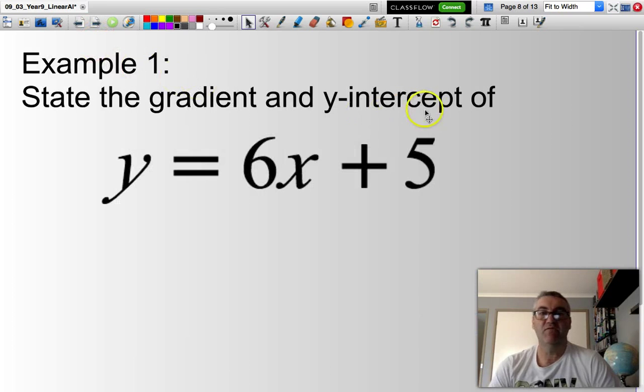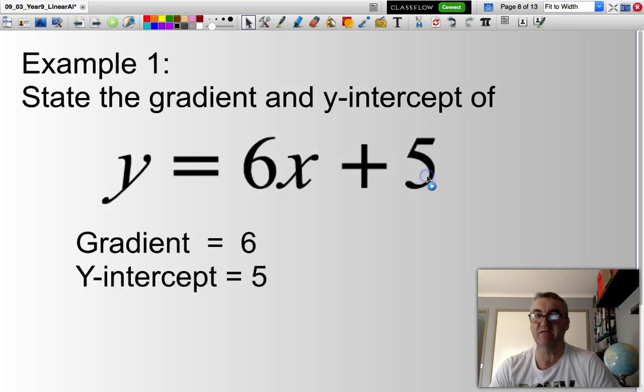Now, if I was looking at this equation here, y equals 6x plus 5, what is the gradient and what is the y-intercept? Well, the gradient, or my value of m, equals 6. My y-intercept is 5. That's where I go through the y-axis.